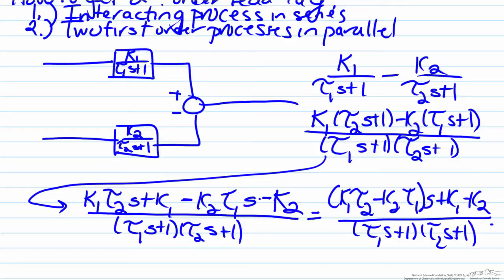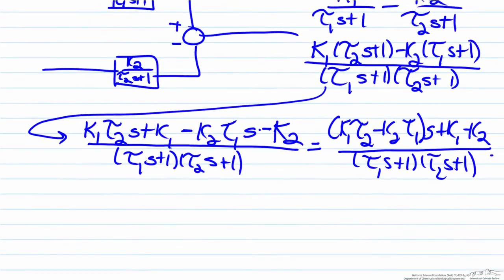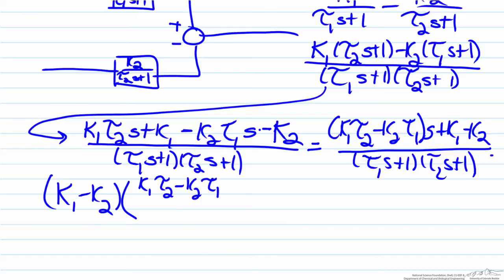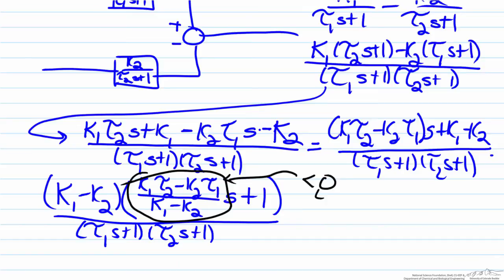To get into standard form we factor out (k1 − k2). This gives a gain of (k1 − k2) multiplied by [(k1·tau2 − k2·tau1)/(k1 − k2)]·s + 1, divided by (tau1·s + 1)(tau2·s + 1). So tau a equals (k1·tau2 − k2·tau1)/(k1 − k2), and if this term is less than zero, that means we have an inverse response.